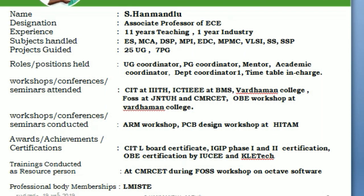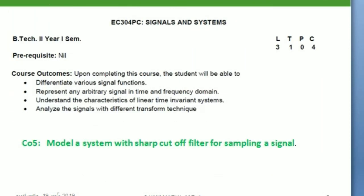I have a membership in professional bodies, including life membership in ISTE. Coming to the course — Signals and Systems — there are four Course Outcomes given by the university in the syllabus. I have taken those as-is and added one more CO, making a total of five COs.